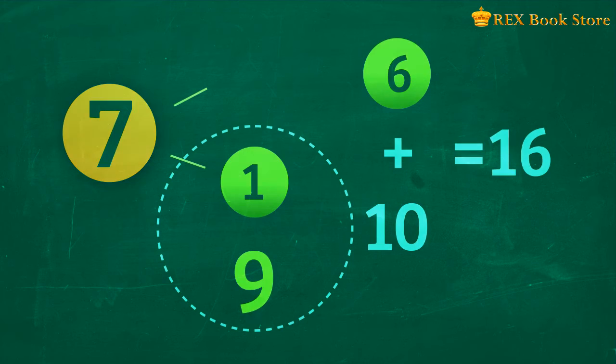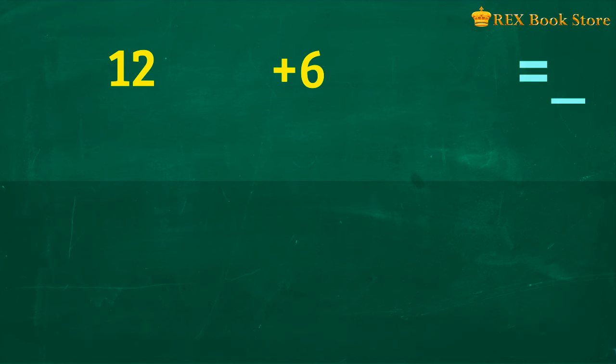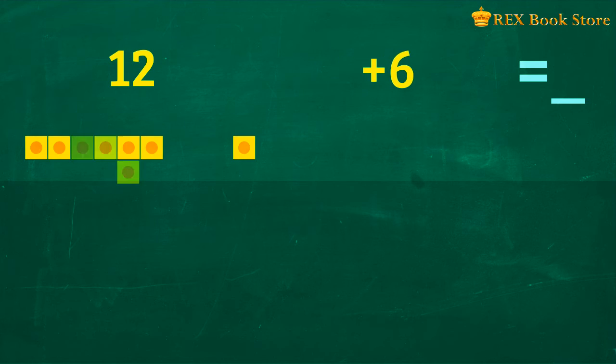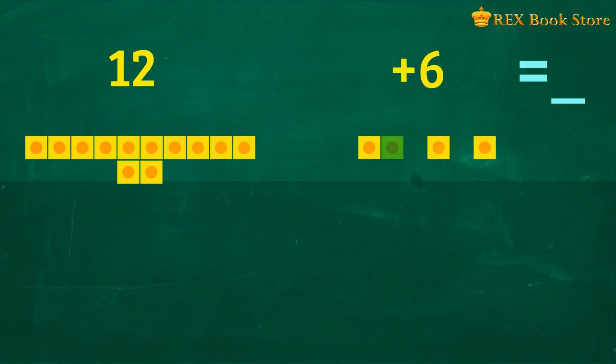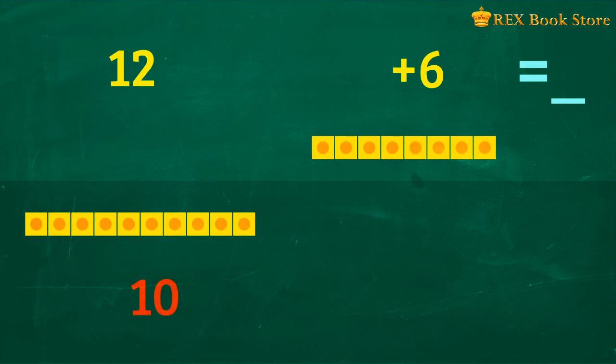Another way of adding is regrouping. Take a look at this addition sentence. 12 plus 6 is equal to how many? To represent the numbers, we have 12 units and 6 units. We need to regroup the larger number so that we have only 10 units. Now we have two groups, 10 units and 8 units. 12 plus 6 is equal to 10 plus 8. 10 plus 8 is equal to 18. So 12 plus 6 is equal to 18.